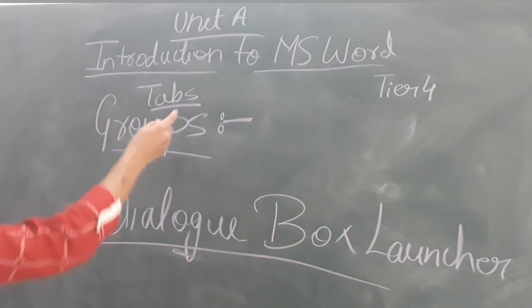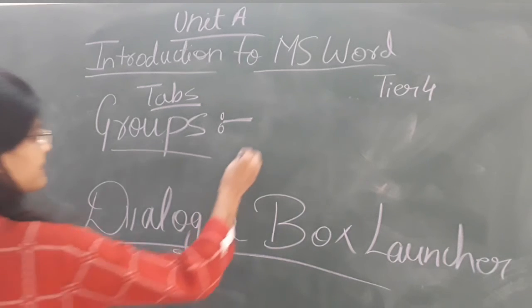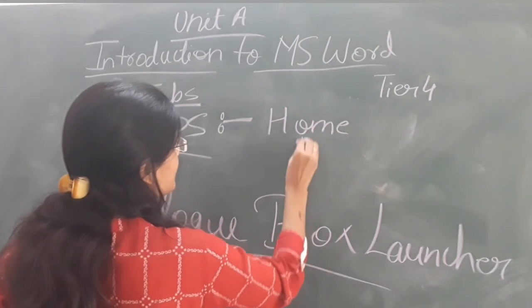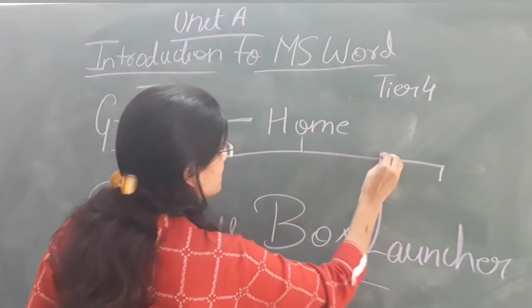For example, we can take the example of Home tab. Home tab has five groups. Home is divided into five groups.